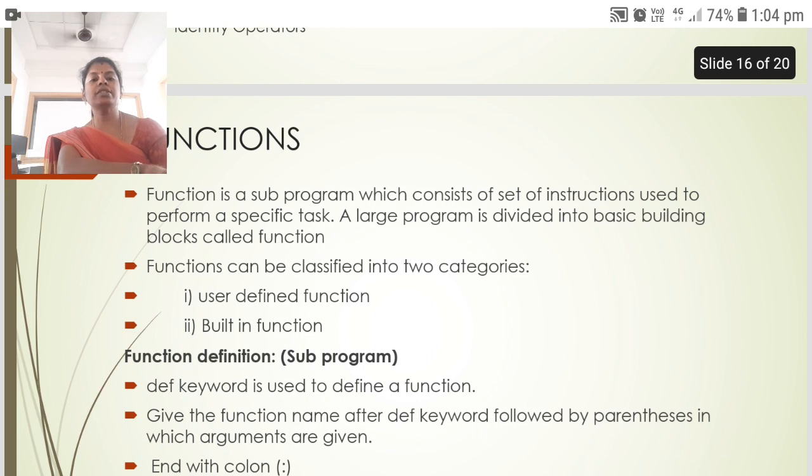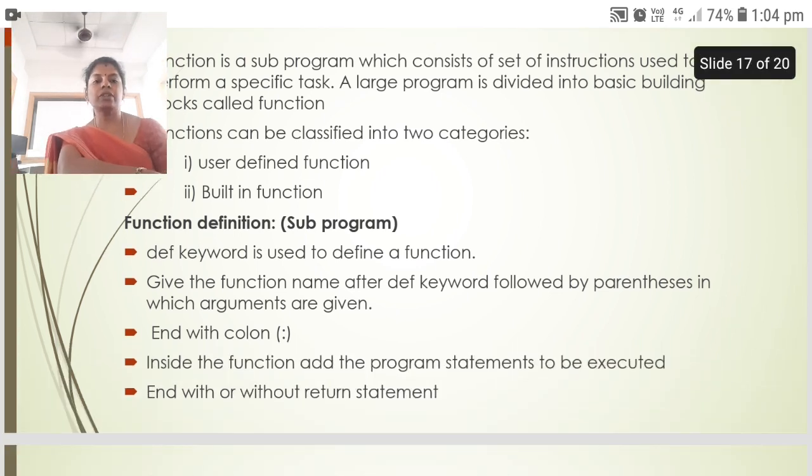The next is functions. Function is a sub-program which consists of set of instructions used to perform a specific task. A large program is divided into basic building blocks called function. Functions can be classified into two categories: user defined function and built-in function. The function definition: DEF keyword is used to define a function. Give the function name after DEF keyword followed by parenthesis in which arguments are given. End with colon symbol. Inside the function, add the program statements to be executed. End with or without return statement.